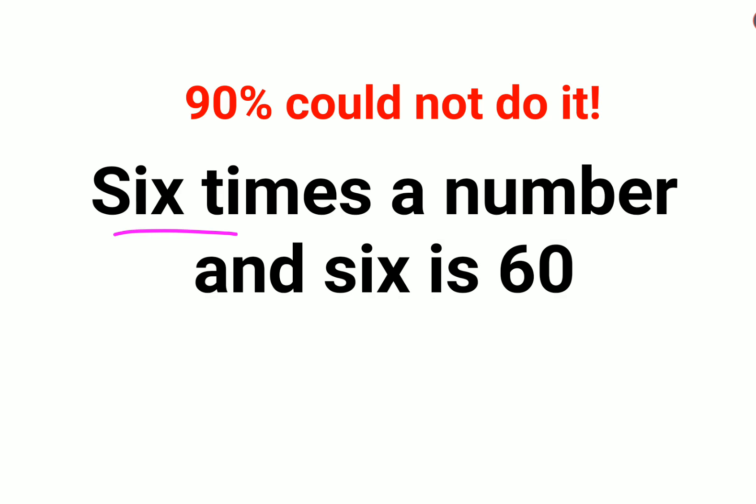Let's write this entire word problem in mathematical form. 6 times, let the number be x. So 6 times x, that is 6 into x, and 'and' always means addition, and 6. 'Is' stands for equals, so it's 6x + 6 = 60.